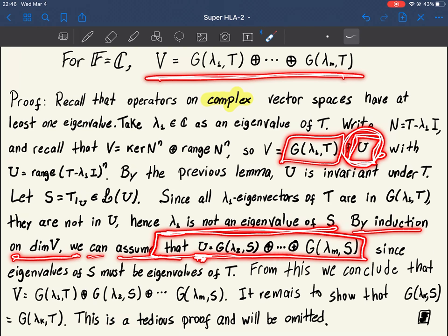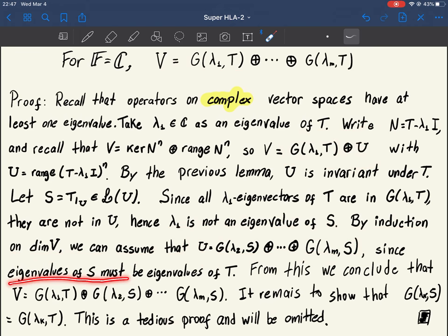So U can be decomposed as direct sum of generalized eigenspaces of this operator S, with respect to all its distinct eigenvalues. And now we note that all eigenvalues of S must be eigenvalues of T. So these are also eigenvalues of T.